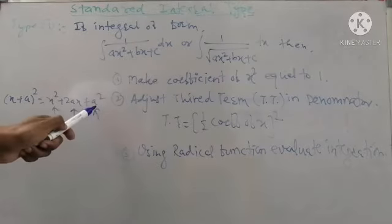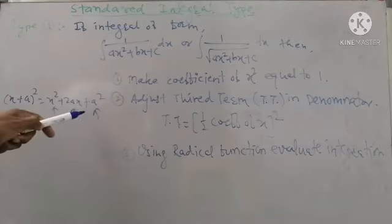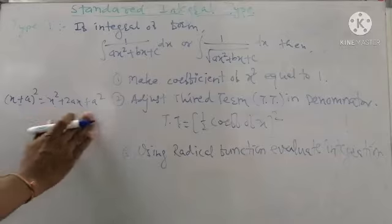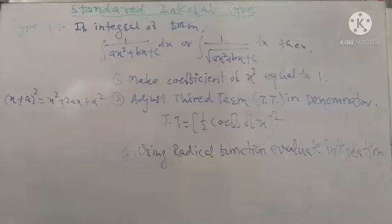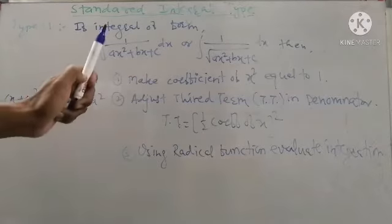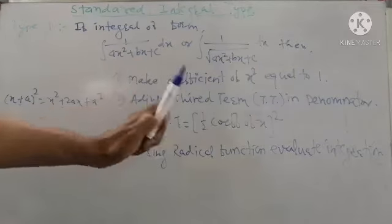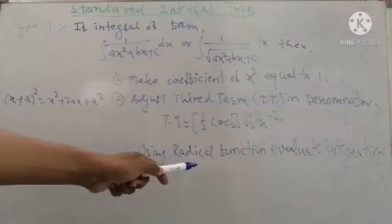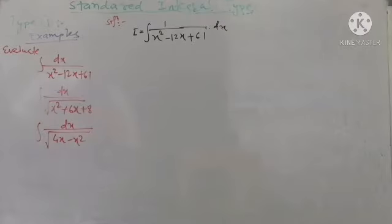If the expansion gives a perfect square of (x + a)², or (x - a)² where the second term is negative, the third term a² is always a positive constant. We need to adjust this third term in the denominator. Once the third term is adjusted, we can evaluate the integration using standard radical function formulas.